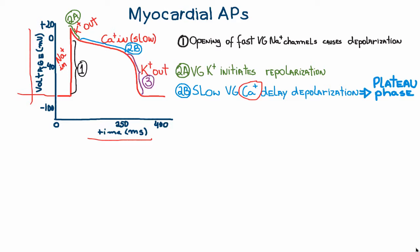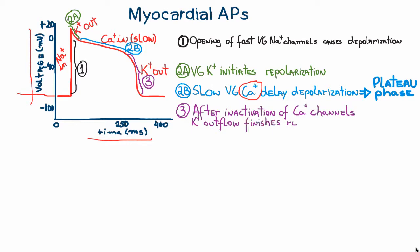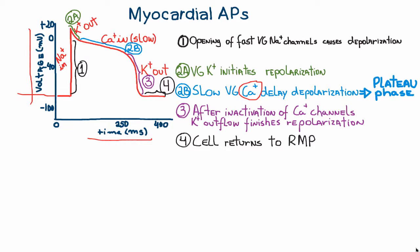The next step — phase three — is when the calcium channels are inactivated. The potassium outflow then finishes the repolarization, and the cell returns to its resting membrane potential. If you're not clear on resting membrane potential, you can click the link for my other video on that topic.